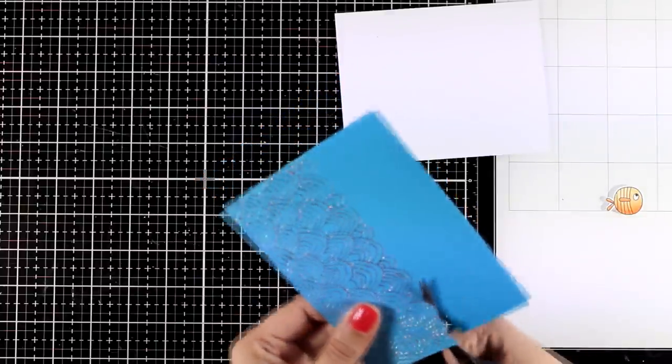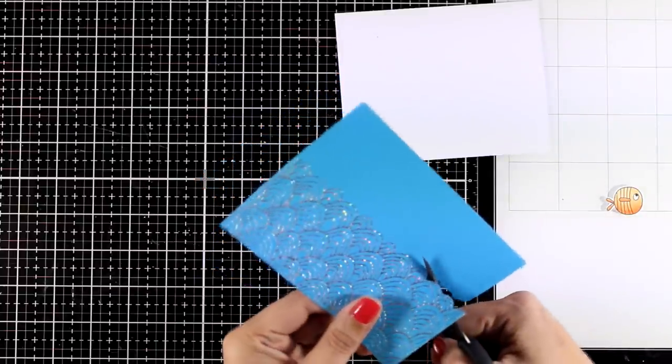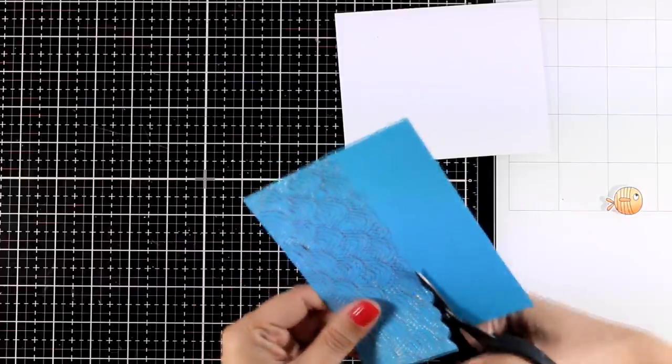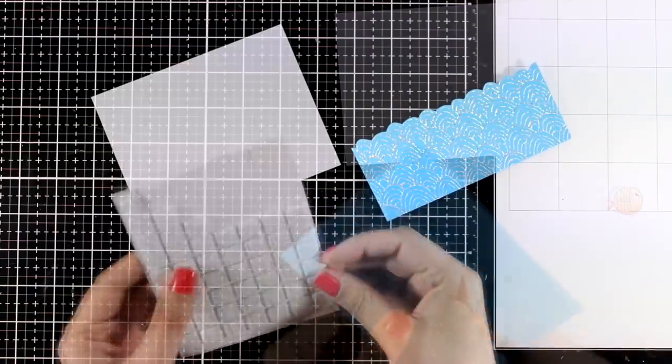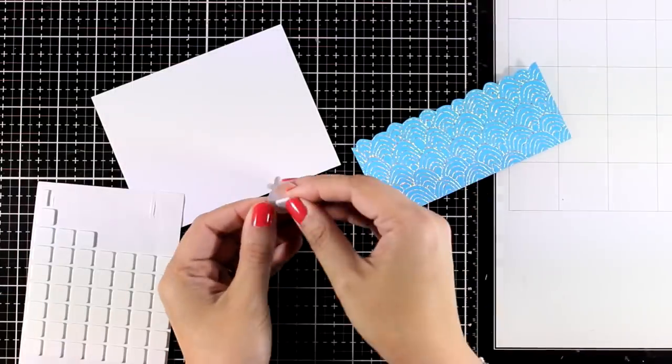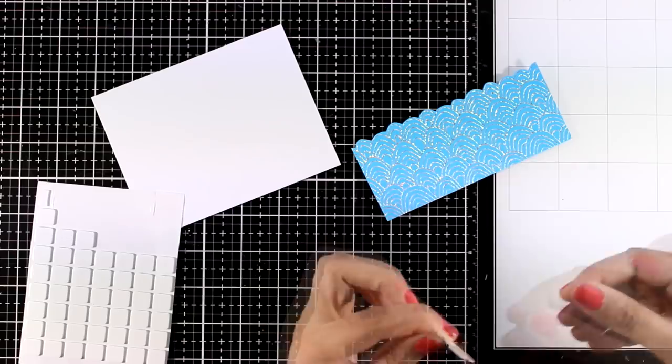If you can see I have already cut out stamped and colored a little fish and I'm sure you all have a little fish somewhere in your stash. This one is from my favorite things. You will find by the way everything I'm using linked down below.